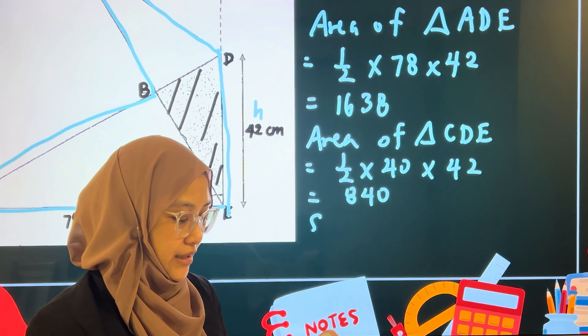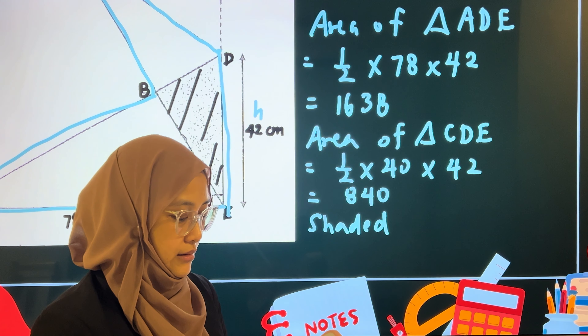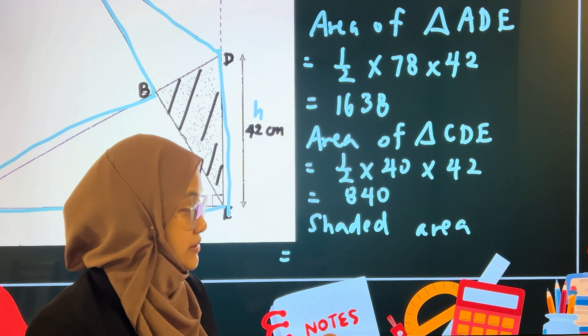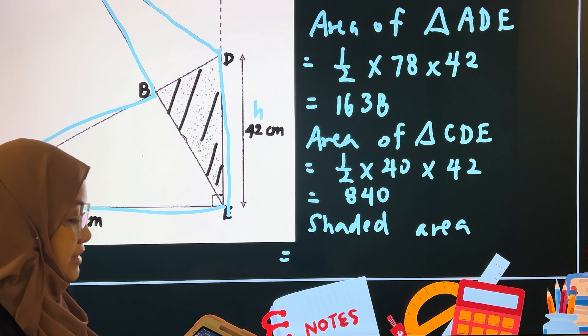Therefore, shaded area is equals to the sum of areas of the two triangles: 1,638 plus 840 minus 2,140. Key this into the calculator. You should get 338 square cm.